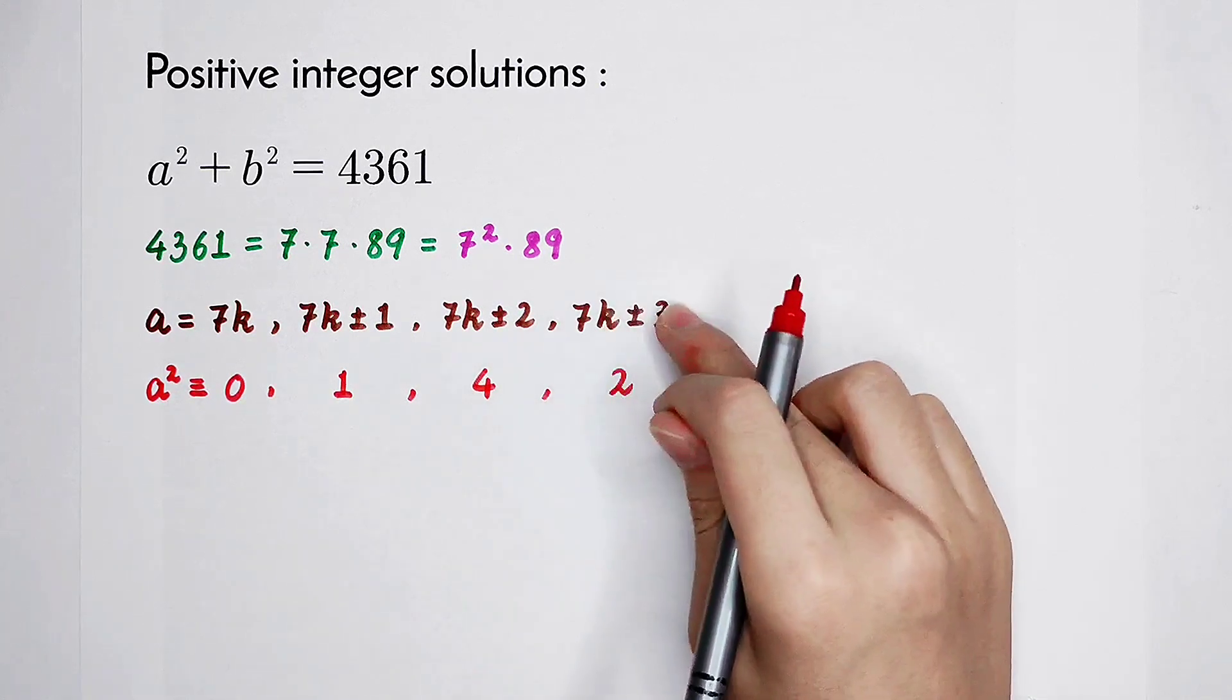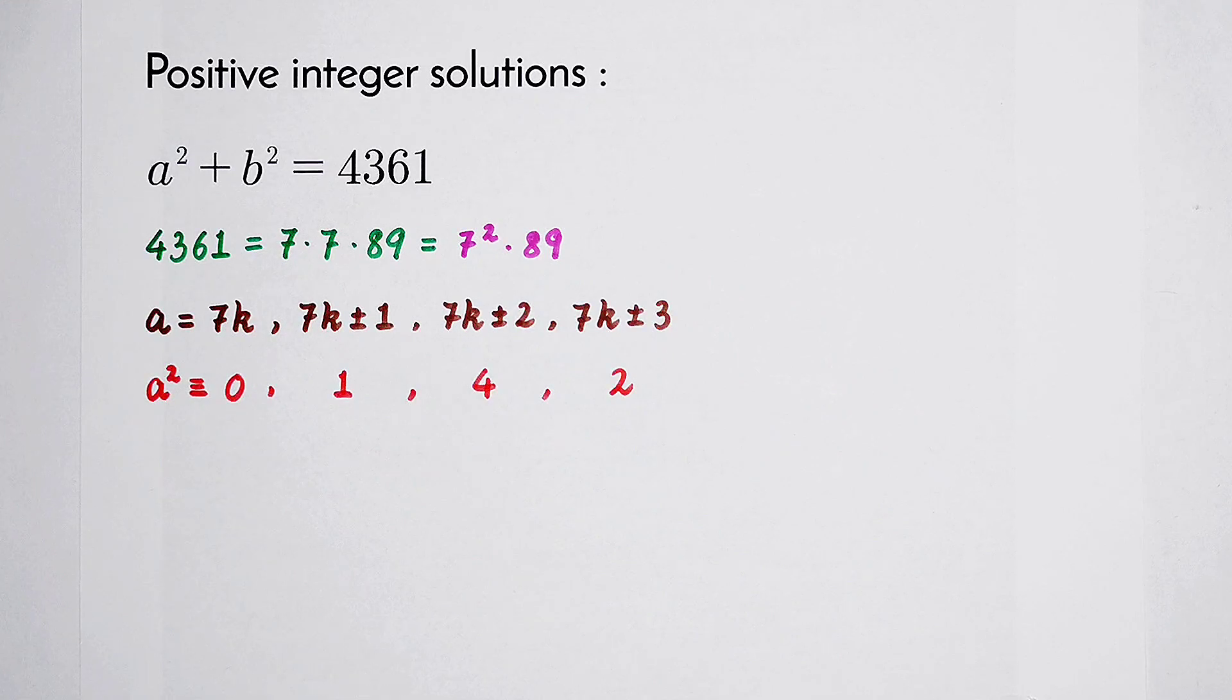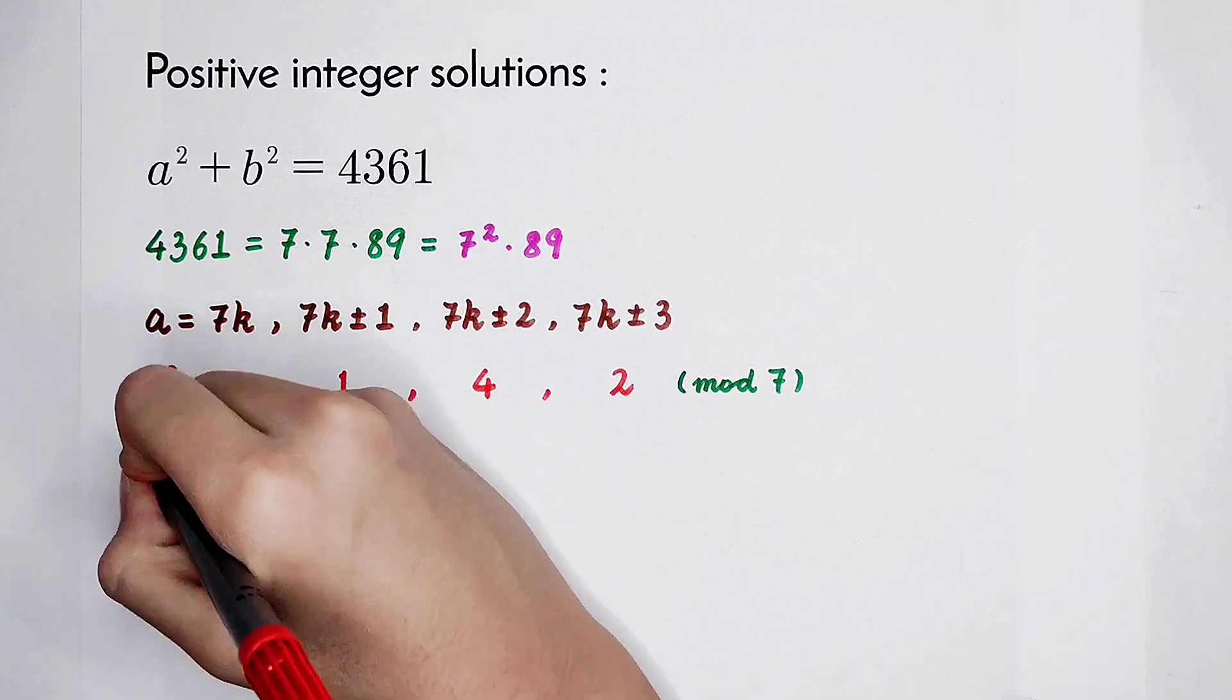Why? Because 3 squared is 9, and 9 is congruent to 2 mod 7. Actually, it's the same thing for b squared.